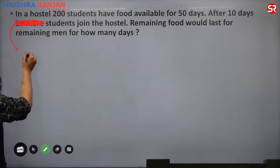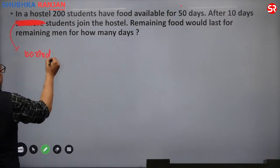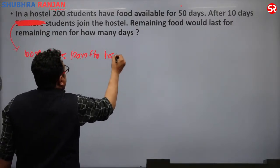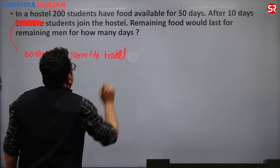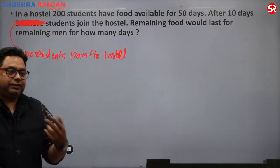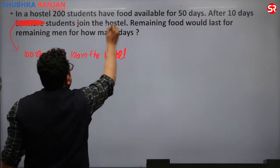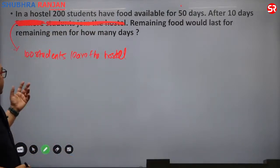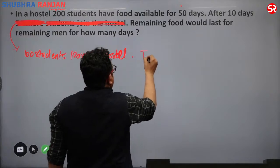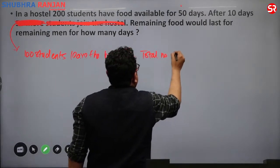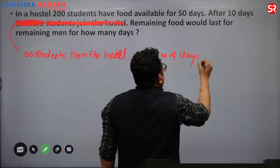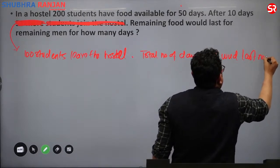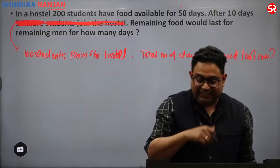Now I change the question: in a hostel, 200 students have food for 50 days. After 10 days, 100 students leave the hostel. What is the total number of days the food would last? Total provision 10,000, consumed 2000, left is 8000. Now consumed by 200 minus 100 equals 100 men, so D1 equals 8000 / 100 equals 80 days.